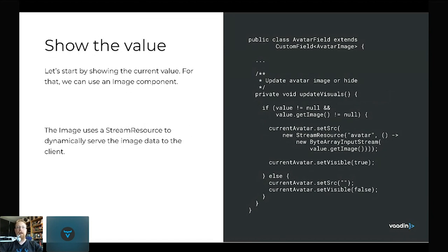The update visuals method looks like this: if the value is not null and we have byte data, we set the source for the image component using a StreamResource — an easy way to serve dynamic content from Java code by taking the byte array and serving it to the client. If there's no value, we clear the source and set visibility to false.